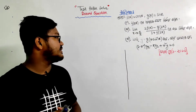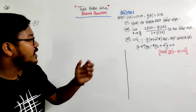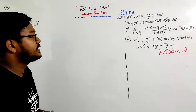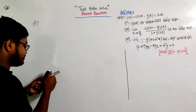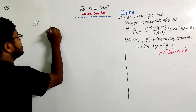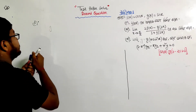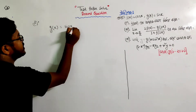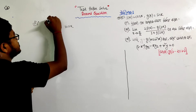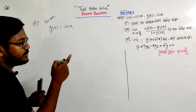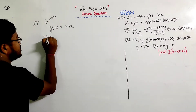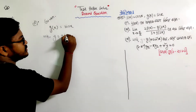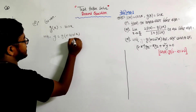Okay guys, now we will solve the next question. The value of y is equal to g of r·sin⁻¹(x). We will get the value of g of x. The value of g of x is sin x. This is given data.